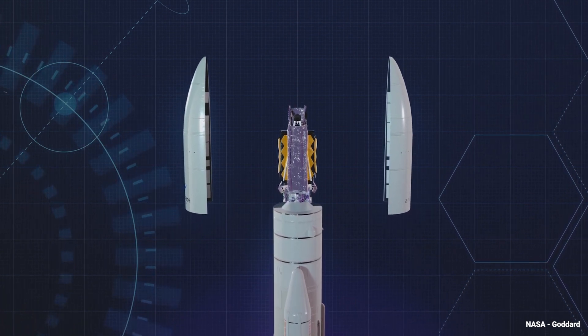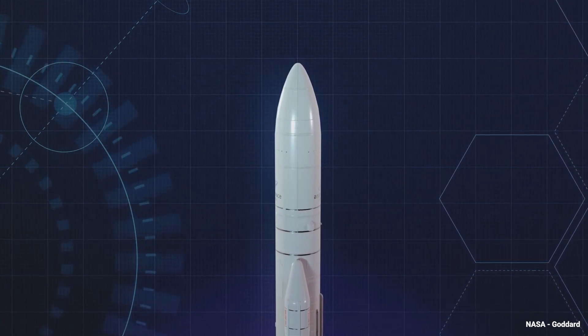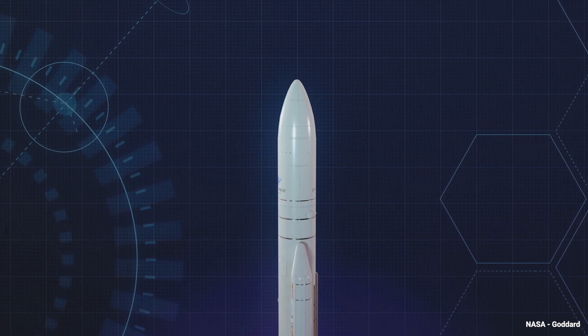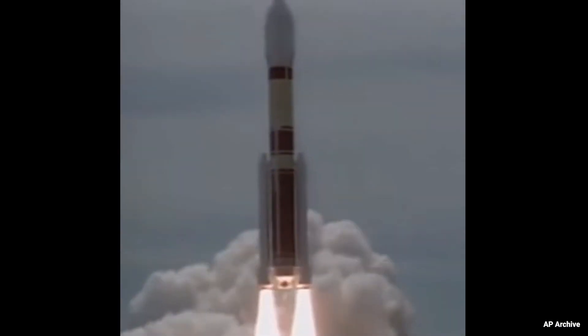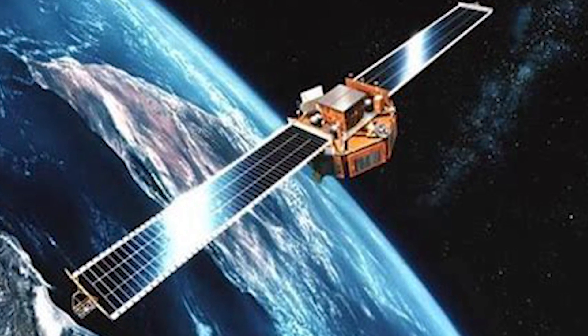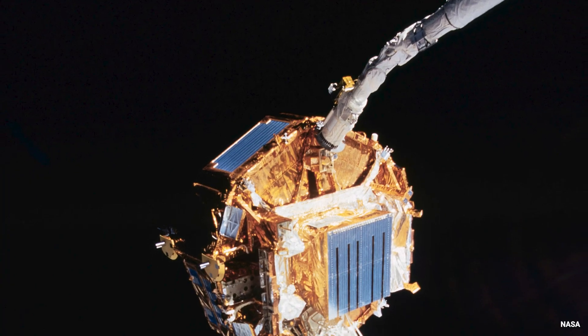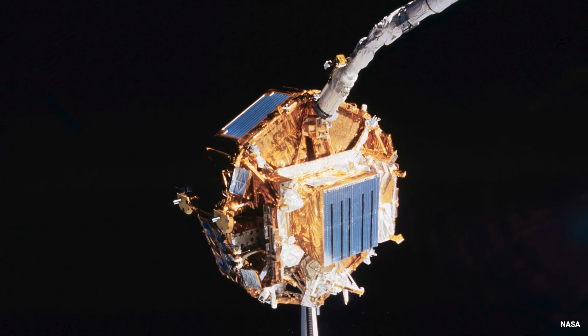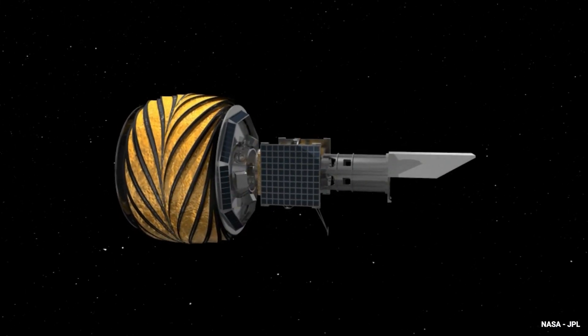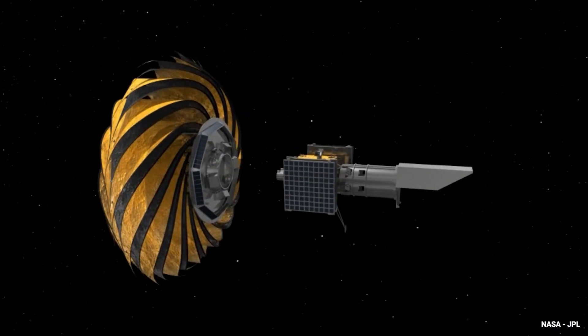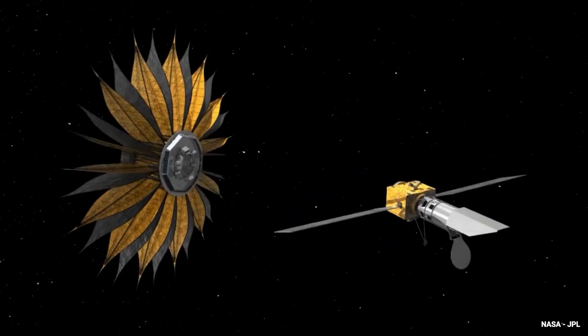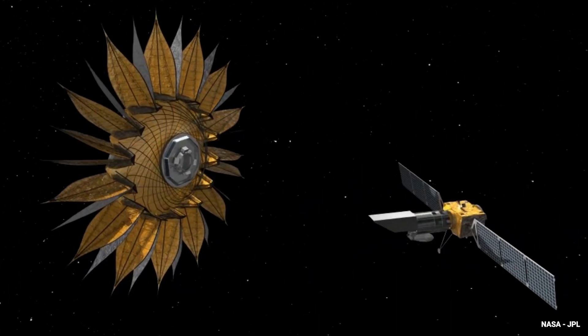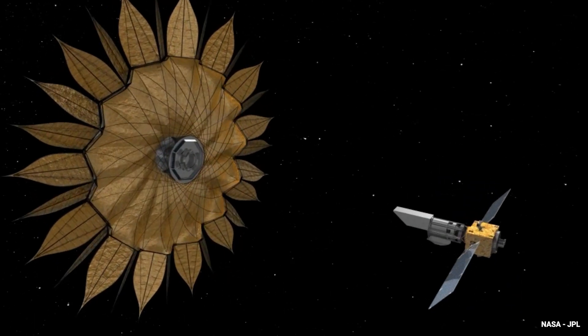The first use of origami to reduce the footprint of a payload was in 1995 when a Japanese spacecraft launched a folded solar array. More recently, this folding technique is seen with StarShade. Developed at NASA's Jet Propulsion Laboratory, StarShade is a 118-foot screen that will be folded down to a mere 8 feet for launch.